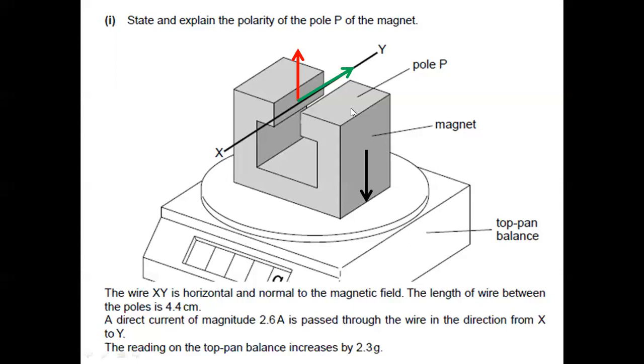Now, so far, we have established that the force acting on the wire is directed up while the current in the wire is directed from X to Y. For us to be able to determine the polarity of pole P, we must determine what's the direction of the field.